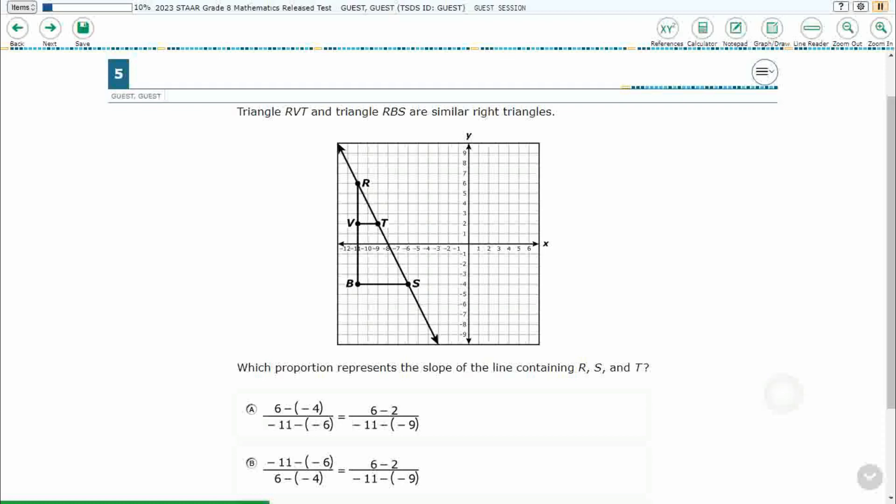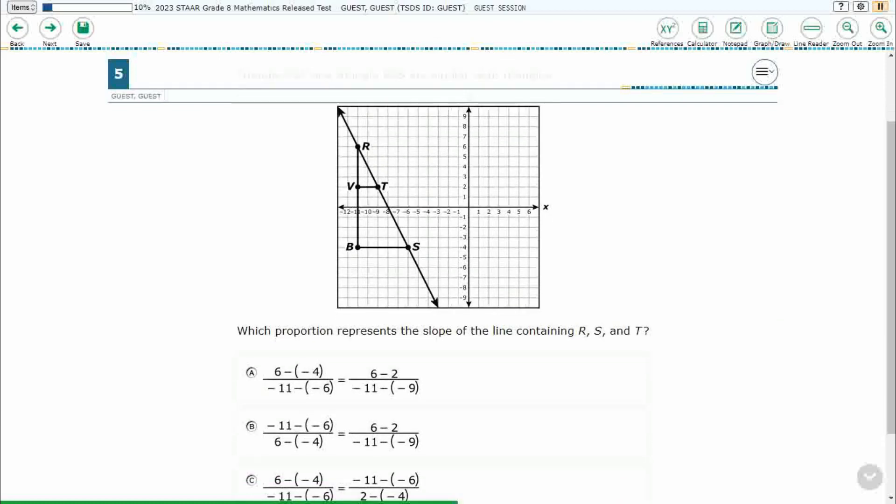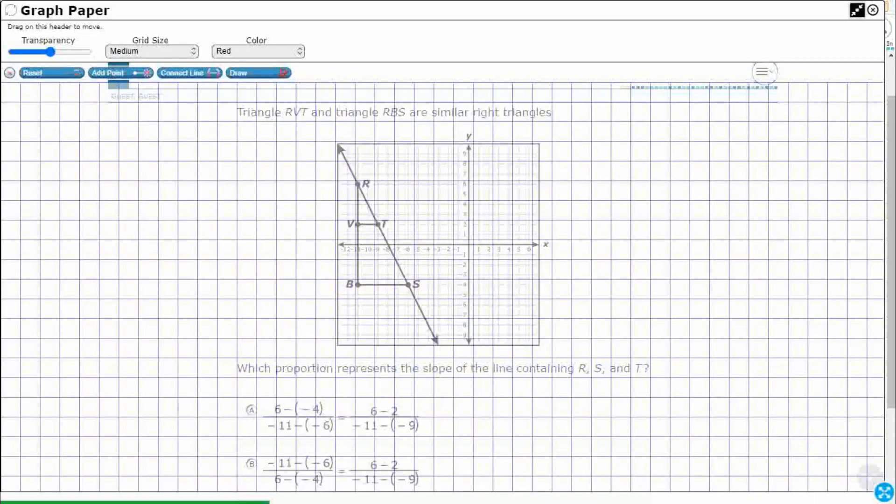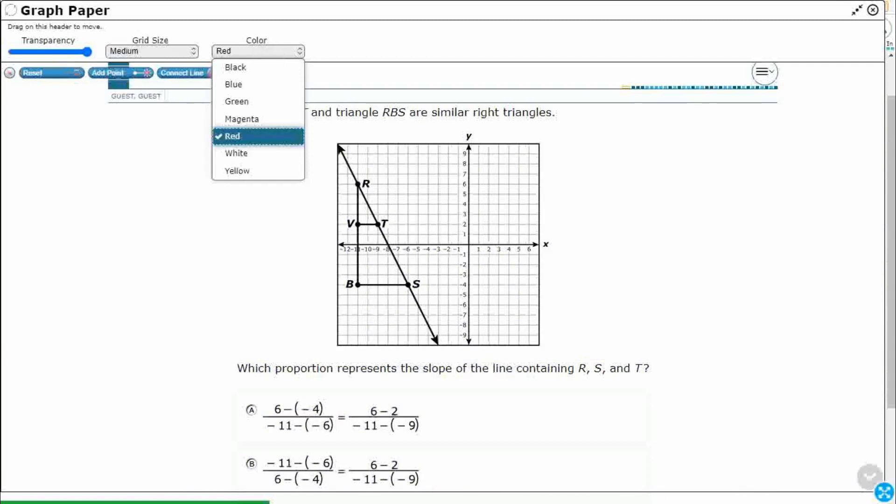OK, so we've got two different triangles here that are similar, RVT and RBS. So let's see what we're talking about here. Using just the letters that they give you, RVT is this smaller one right here. And then we'll do RBS, that's that bigger one, we'll make that green.